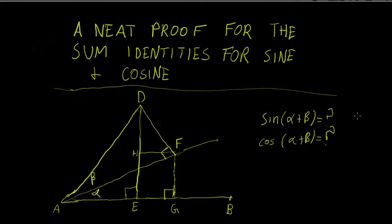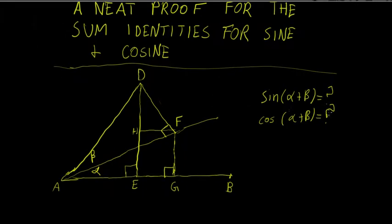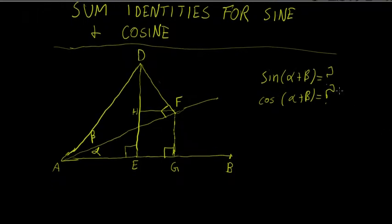In this video we're going to be taking a look at a neat proof for the sum identities for the sine and cosine functions. Once you know the sum identities for sine and cosine, you can derive the difference identities for sine and cosine, as well as all of the sum and difference identities for the tangent and cotangent functions fairly easily using some algebra. We're going to look at how we can express sine of a sum of two angles — sine of alpha plus beta — in terms of sines and cosines of those individual angles alpha and beta, and we want to do the same for cosine of alpha plus beta.